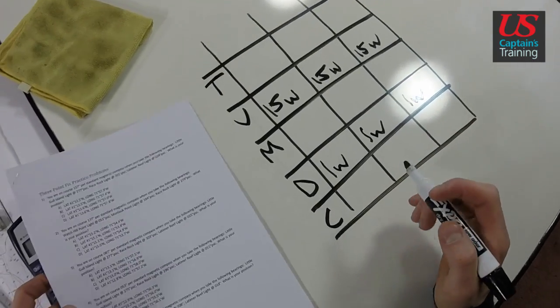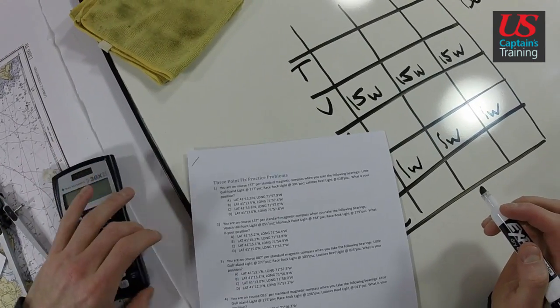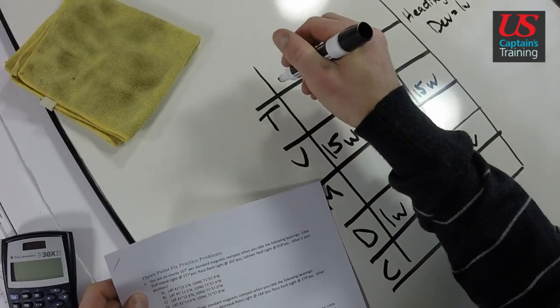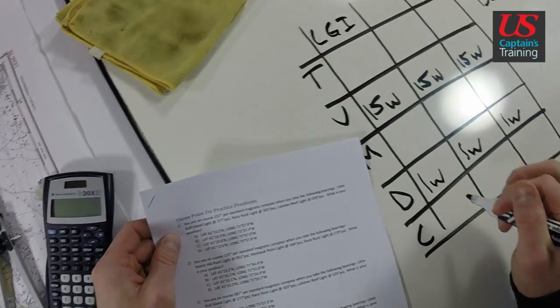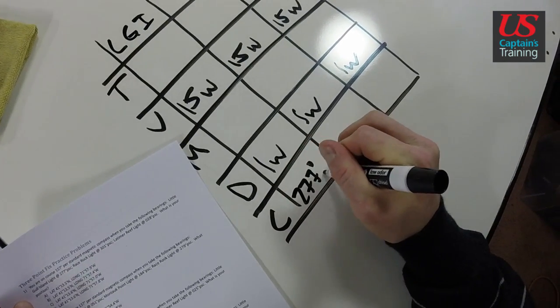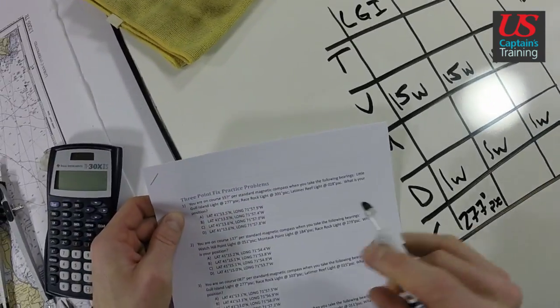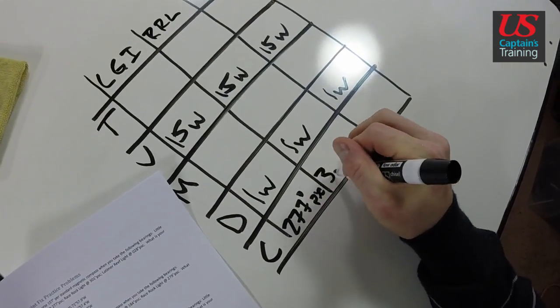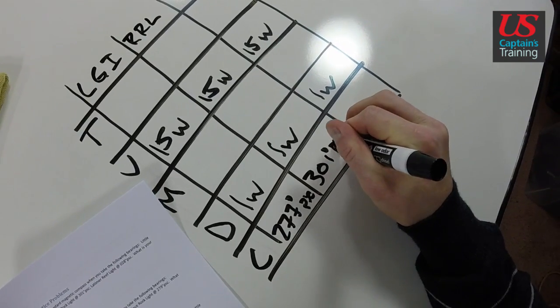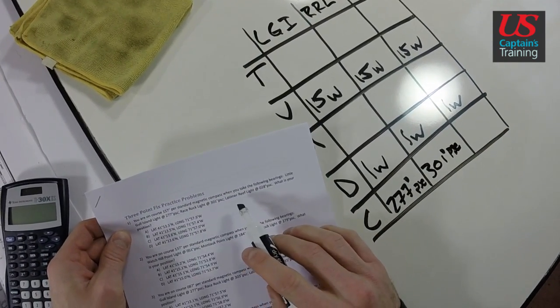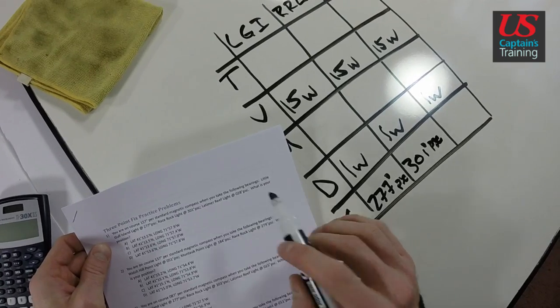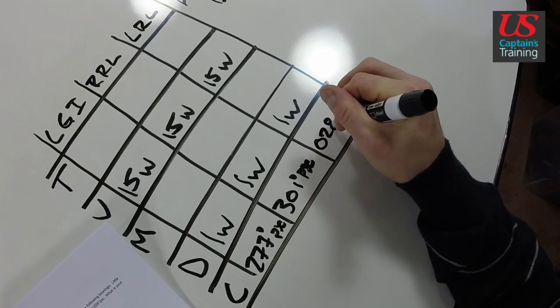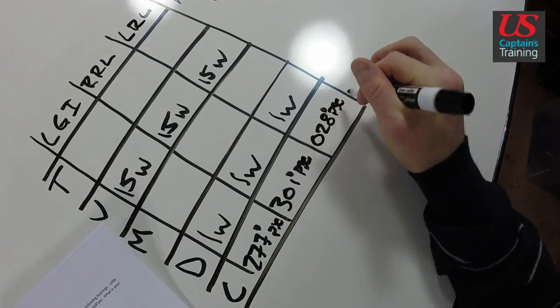So here we are, one west for a heading of 157. Now let's record these bearings and convert them to true. Little Gull Island 277 degrees PSC, Race Rock Light at 301 degrees PSC, and Latimer Reef Light at 028 degrees PSC.